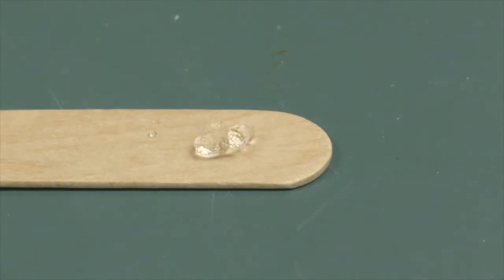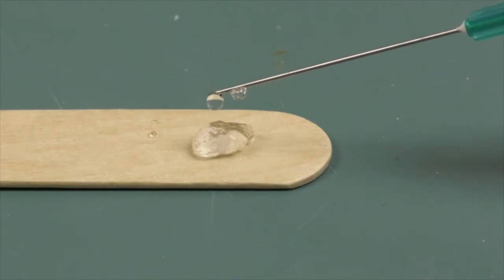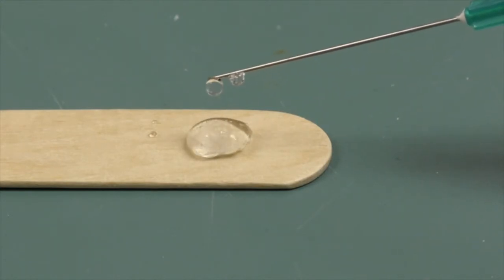Now we're going to put a little bit of the hyaluronidase on there. Now this is not the normal syringe I would use. I wouldn't be using a 3cc syringe with a 21 gauge needle on it. I'd be using a much smaller syringe.